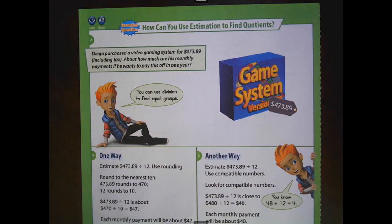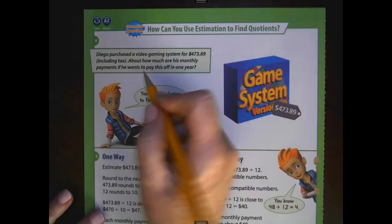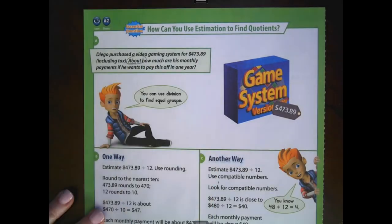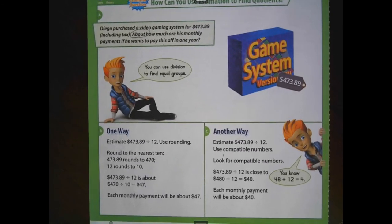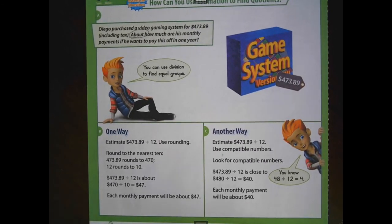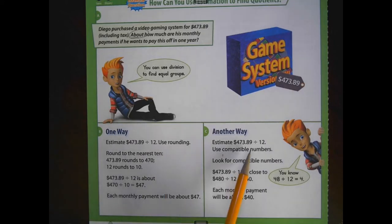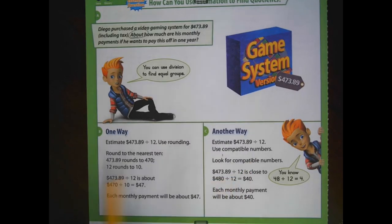Diego purchased a video gaming system for $473.89, including tax. About how much are his monthly payments if he wants to pay this off in one year. We are just looking for an estimate with the keyword about how much. Our fifth grade helper lets us know that we use division to find equal groups. The two ways that we divide, we use estimation to divide are the same as with whole numbers. We can either use rounding or we can use compatible numbers. So let's look at the rounding.